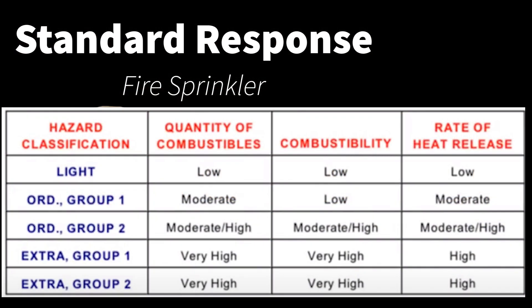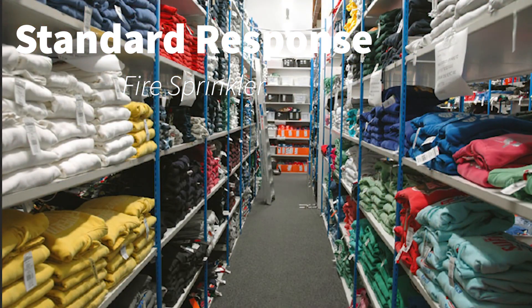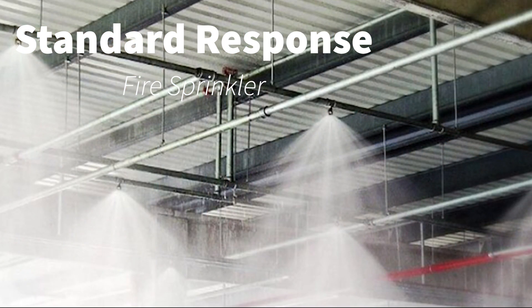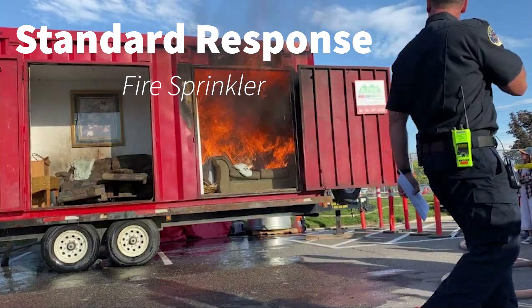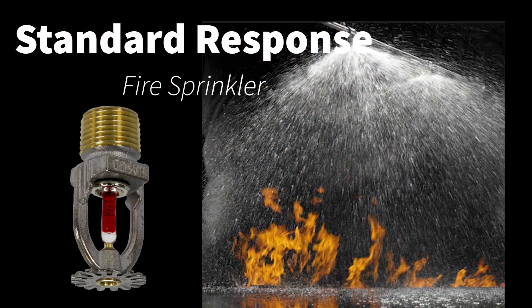When ordinary hazard's combustibility and rate of heat release goes to moderate and high — ordinary hazard group two — you will use the standard response head. Examples are retail stores and storage rooms. The reason for switching to standard response is that higher combustibility and heat release can cause too many quick response heads to operate at the same time, which is very taxing on the system's pressure and causes the spray pattern to be less effective. A smaller number of heads operating in the correct locations with the correct pressure gives much better results in controlling the fire — as proven in live fire tests.